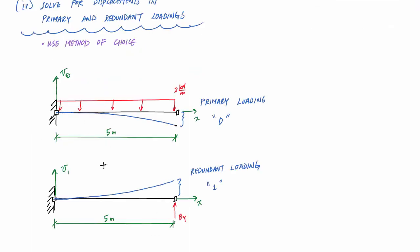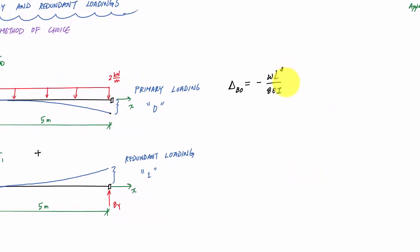So for the primary loading, we would get, depending on whatever method that we chose, we would find that the deflection here, delta at B, for the primary loading, is going to be a negative result. And I just used the chart value, and it's going to be negative WL to the 4th over 8EI.